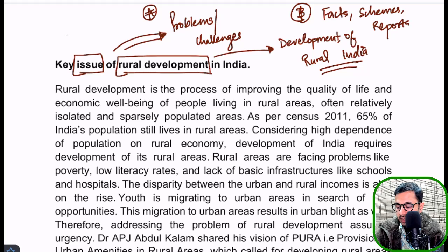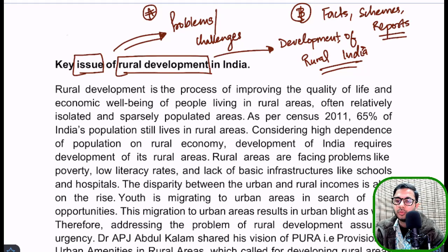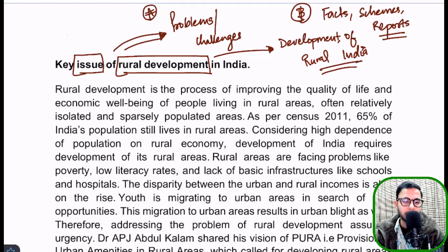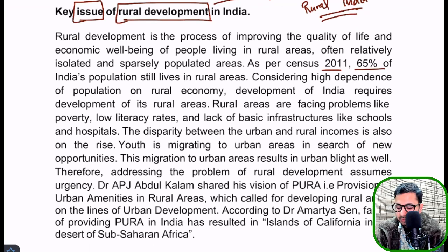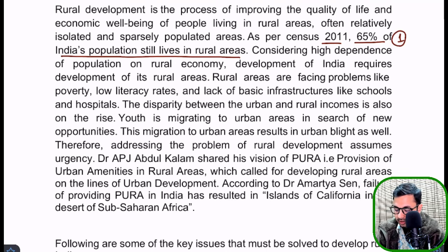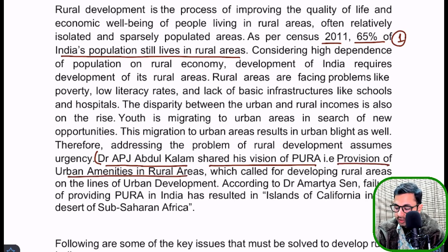Write down whatever facts, schemes, credible definitions, and credible sayings you remember related to rural development. I actually did this on a piece of paper and then I saw the magic — I could integrate all those things instantly into the essay. Point number one: as per Census 2011, 65 percent of India's population still lives in rural areas. Point number two: Dr. APJ Abdul Kalam shared his vision of PURA — Provision of Urban Amenities in Rural Areas — which called for developing rural areas on the lines of urban development.